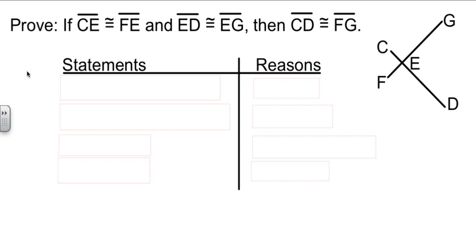Now, our job here is going to be to prove something. If we know that CE is congruent to FE, and we know ED is congruent to EG, then our job is to prove that FG, this whole segment, is congruent to CD, this whole segment.